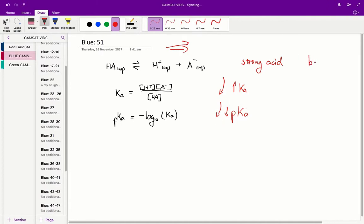Similarly, strong bases, they also have a low pKb. So strong acids have a low pKa, strong bases have a low pKb. So this helps us a lot in answering the question.